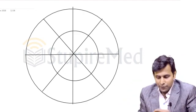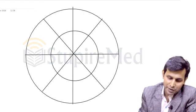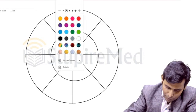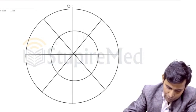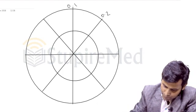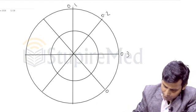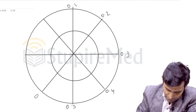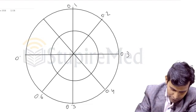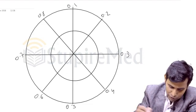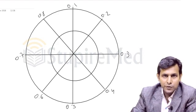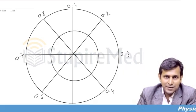What I have drawn here is a clock of 0.8 seconds, which starts with 0.1, 0.2, 0.3, 0.4, 0.5, 0.6, 0.7, and 0.8. So this is a cardiac cycle duration of 0.1 to 0.8 seconds.